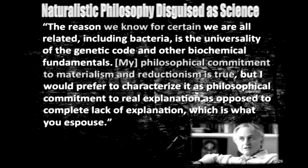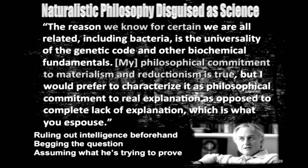Notice the intelligent design people are saying it could be a natural cause, but it could also be an intelligent cause — so why don't we follow the evidence where it leads? What Dawkins is doing is ruling out intelligence beforehand. He's begging the question — assuming what he's trying to prove. In fact, this is called circular reasoning.